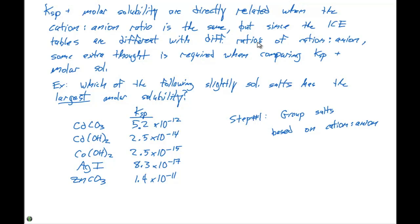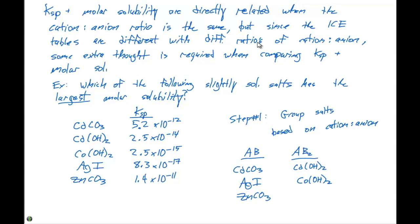We put these five salts into two groups: the AB group and the AB₂ group. The AB group contains cadmium carbonate, silver iodide, and zinc carbonate. The AB₂ group contains cadmium hydroxide and cobalt hydroxide.